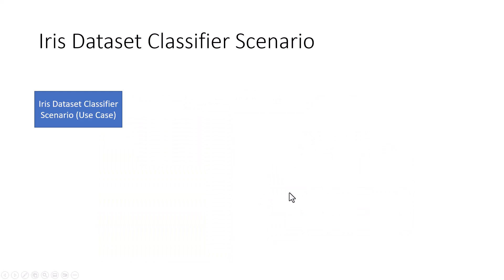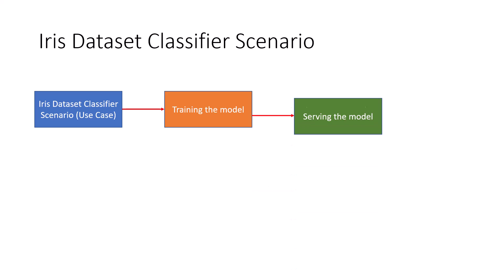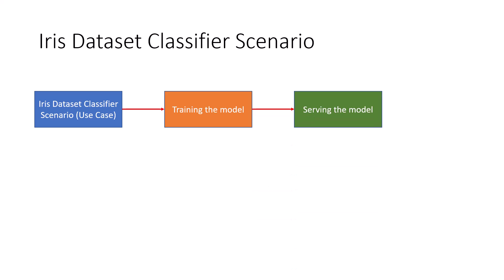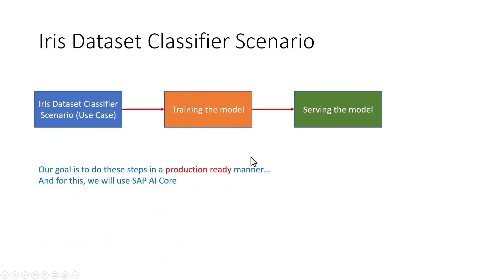For our use case or scenario, the first step is to train the model. Once the model is trained, we can serve it to make predictions. In this video, we are only going to look at training the model. Our goal is to do these steps in a production-ready manner — not just writing code to train the model, but doing it in a production-ready manner. For this, we will use SAP AI Core.